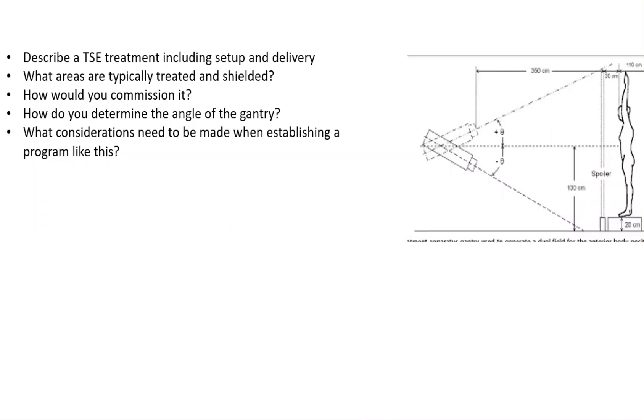For Part Three, you may need to know how to do many special procedures: CSI, TSE, TBI. Today let's talk about Total Skin Electron (TSE). We'll describe a TSE treatment including setup and delivery, what areas are typically treated and shielded, how you would commission it, how to determine the angle of the gantry, and what considerations need to be made when establishing a program like this.